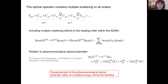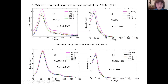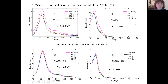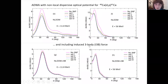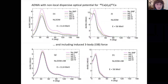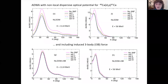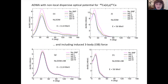We use a non-local dispersive optical potential and add three-nucleon force to it. Results for calcium-40 at two energies show that adding three-nucleon force significantly changes cross sections. However, when we add the induced three-body force — effectively doubling the dynamical part of the non-local DOM — the sensitivity to three-nucleon force contributions decreases substantially. This is understandable: increased absorption makes the system less sensitive to changes in the real part.